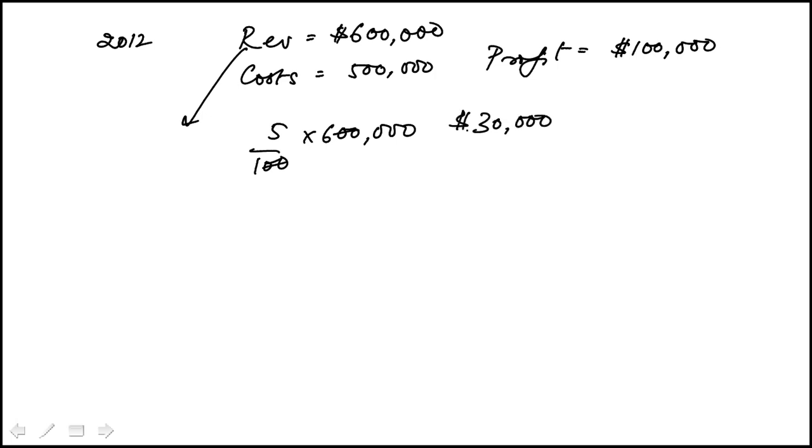And they say that the total cost stayed the same. So your revenue is now $630,000. Total cost stays the same, so the profit is now $130,000.